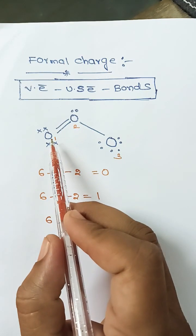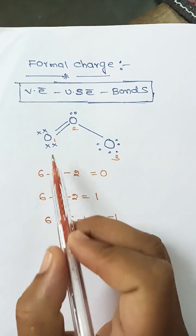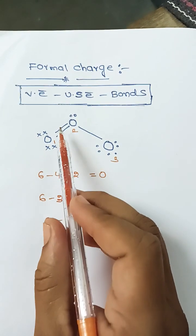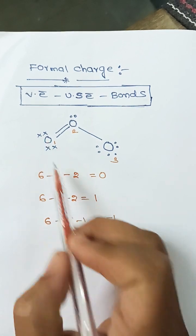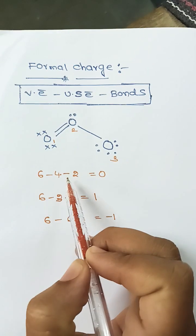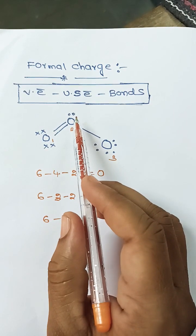Here, for the first oxygen, the valency electrons of oxygen are 6, unshared electrons are 4, and the number of bonds surrounded by this oxygen atom is 2. So 6 minus 4 minus 2 equals 0.